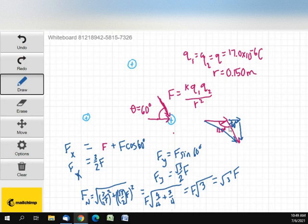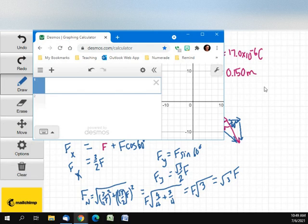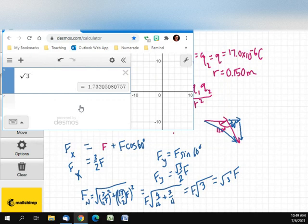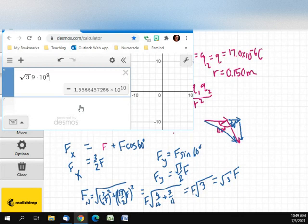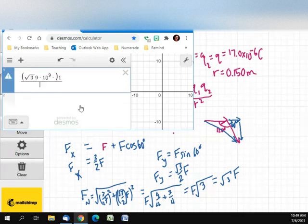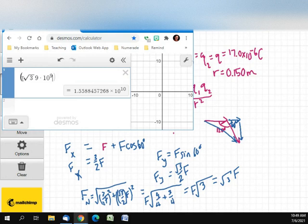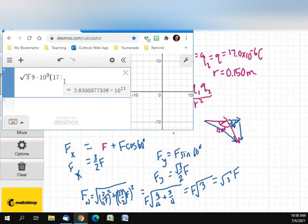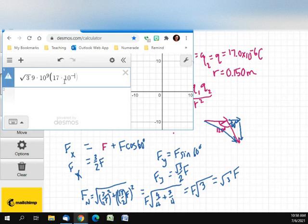Okay. So, let's just use a calculator here. The square root of three times F. But, F is K, which is nine times ten to the ninth power, times Q1, one point... ah, didn't want that. There we go. K, Q, which is 17 times ten to the negative sixth power, squared, because it's Q1 times Q2, and they're both the same.